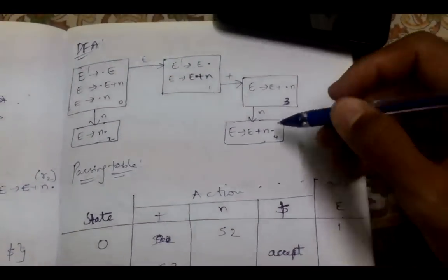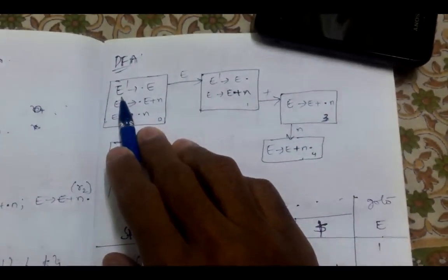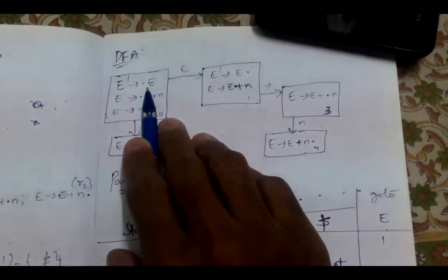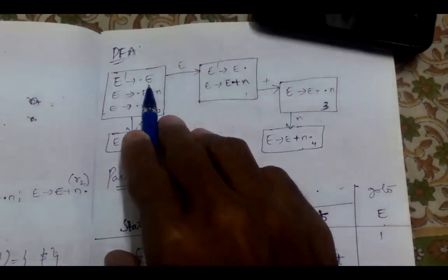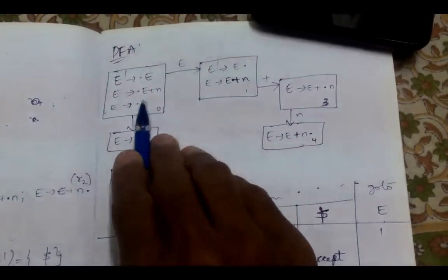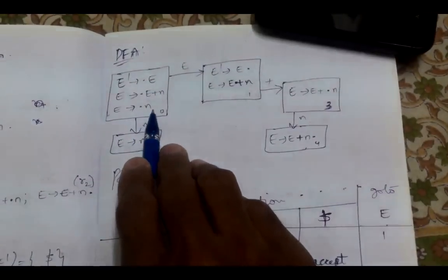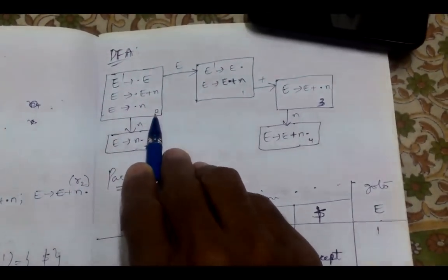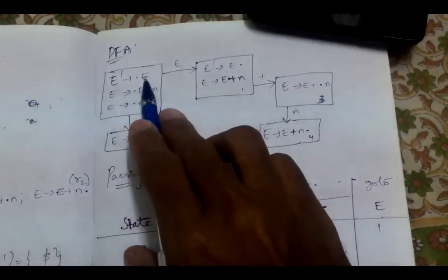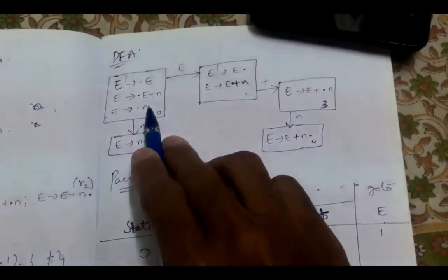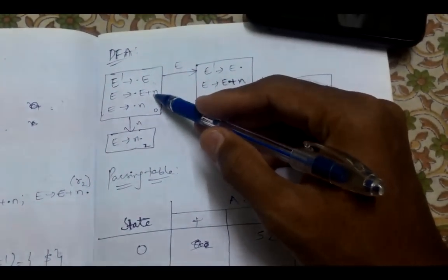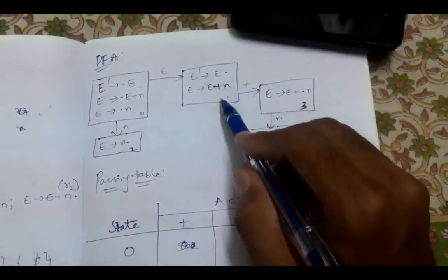We begin the DFA with the augmented grammar item E' → •E. Whenever we have a dot before a non-terminal, we need to expand the productions of that non-terminal. Since we have a dot before non-terminal E, we expand: E → •E + N and E → •N. We label this as State 0. All symbols in front of the dot are considered inputs for this state, so the inputs are E and N.